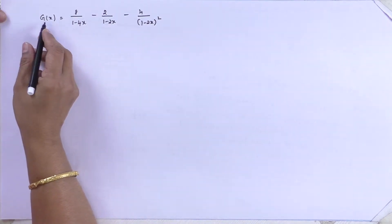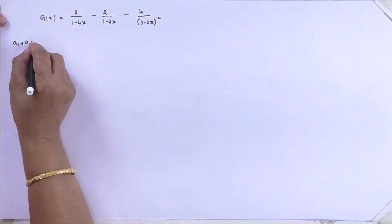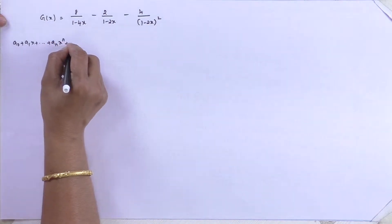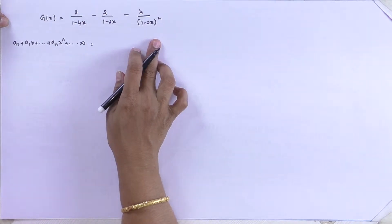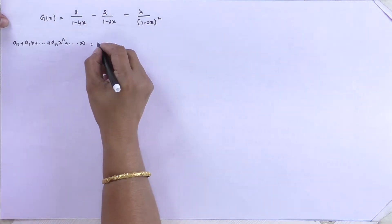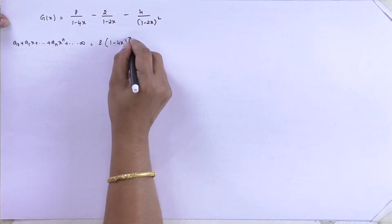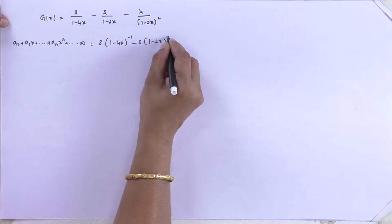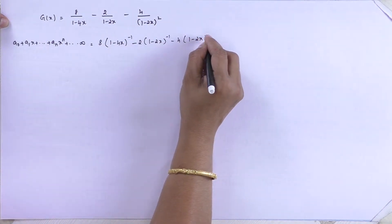Now if I substitute this, g of x is: a-naught plus a1·x plus so on plus a_n·x^n plus so on to infinity, which is equal to all my terms. The denominator terms are in the form of (1 minus ...), so I can write this as 8·(1 minus 4x)^(−1) minus 2·(1 minus 2x)^(−1) minus 4·(1 minus 2x)^(−2).